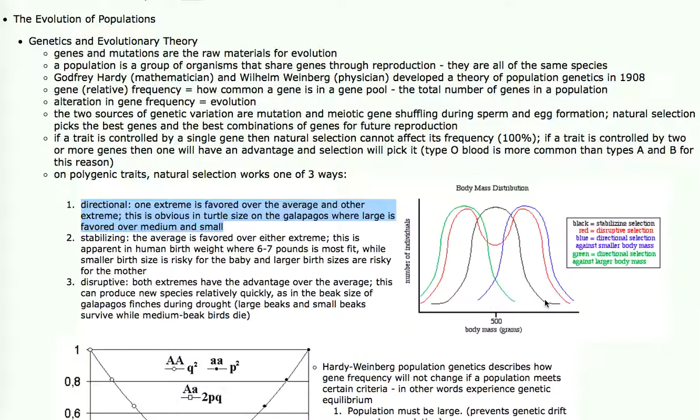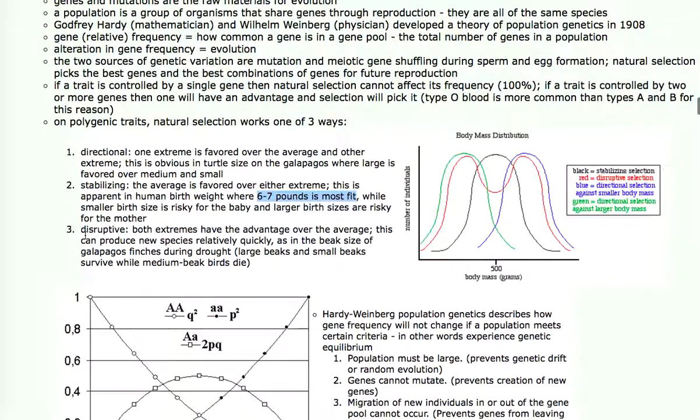That is the case for human birth weight. If a baby is around 6-7 pounds, it has the highest fitness. If it gets above 7 pounds, there's a chance that mom will die in birth, and that reduces the survivorship of the baby. Babies less than 6 pounds run the risk of dying themselves because their body mass isn't high enough to survive. So human birth weight is a stabilizing entity where on the lower side, the baby itself is getting too small, and on the high side, the baby's size is becoming an impediment to mom's health.